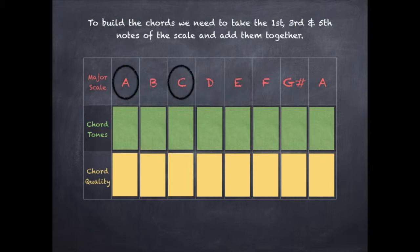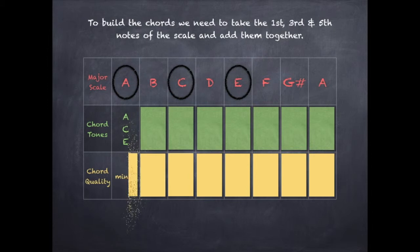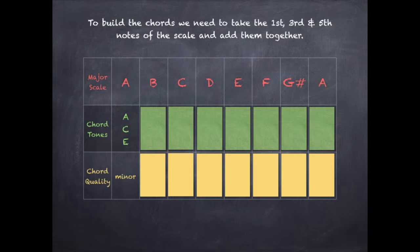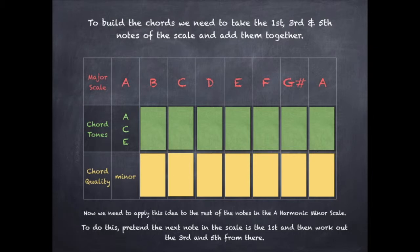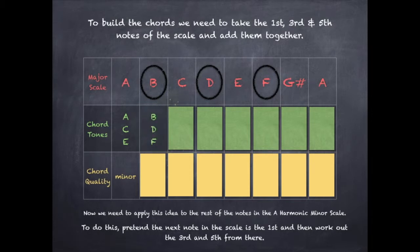So A, C, and E — when we put those three notes together, we end up with a minor chord. Now we need to apply this idea to the rest of the notes in the harmonic minor scale. To do this, pretend the next note of the scale is the first, and then work out the third and fifth from there. So on the second scale degree, we take the second, fourth, and sixth notes of the scale — the B, the D, and the F — we combine them together and we end up with a diminished chord.